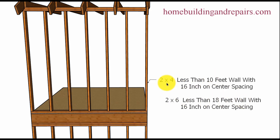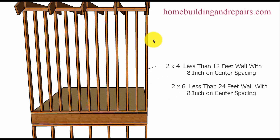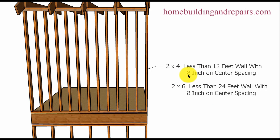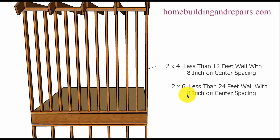These are 'less than, not more than' numbers. I also wanted to point out that this particular reference chart from the building code book — I'll put a reference number in the video description box, not in the video in case they change the number. If you have two-by-fours spaced 8 inches on center, you can go up to 12 feet. Remember, it was 10 feet or less with 16-inch on center spacing for a two-story house. At 8 inches on center with two-by-six, you can go up to 24 feet.